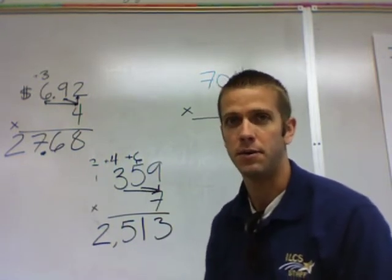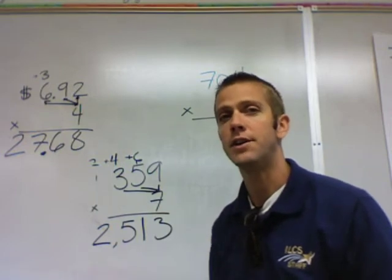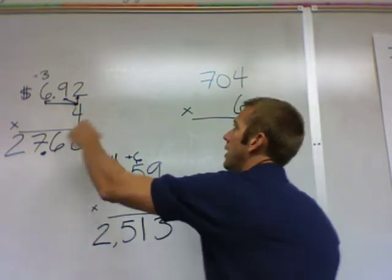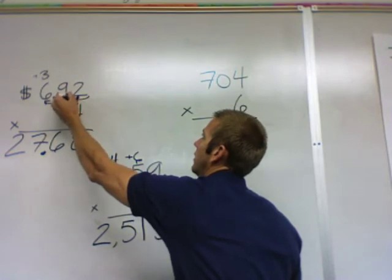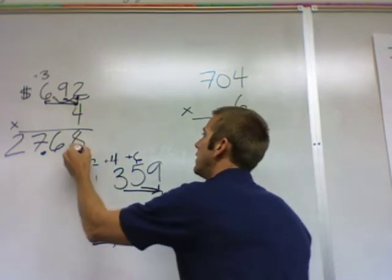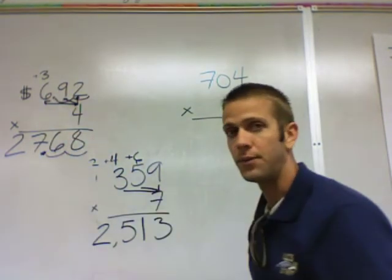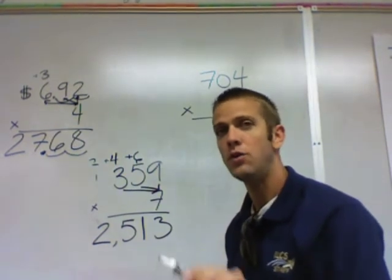It actually gets counted over. So if the decimal is over two spots, then you need the decimal over two spots. That's how you label the decimal.